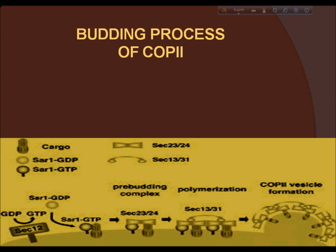Once SAR1 is bound to the membrane, the coat protein complexes Sec23/Sec24 and Sec13/Sec31 bind to the membrane sequentially. These proteins simultaneously contact SAR1 and cargo proteins at the cis-ER membrane. In the Sec23/Sec24 and Sec13/Sec31–SAR1 complex, the coat proteins form a much larger complex. This network deforms the membrane enough to bud a vesicle.